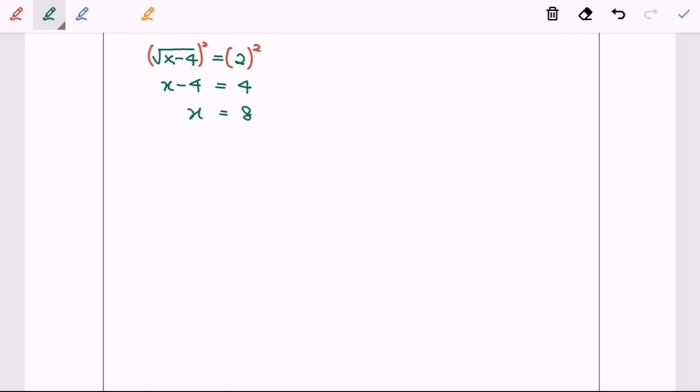Remember to check the validity. Now we have to substitute the value x equals 8 into the equation to show that the left-hand side is equal to the right-hand side.